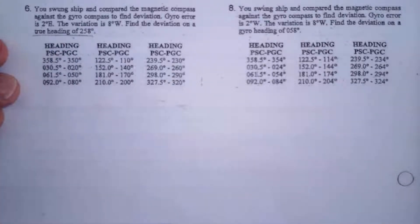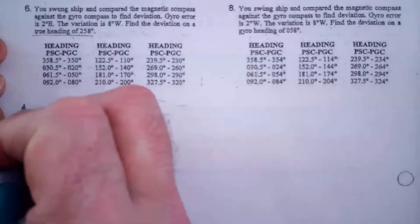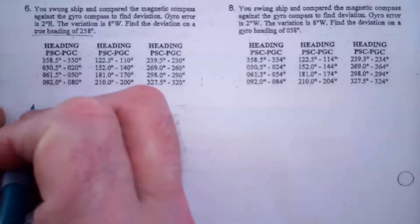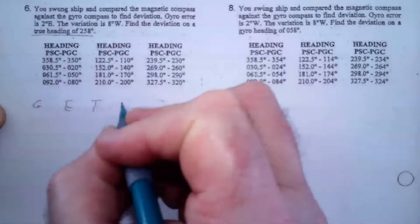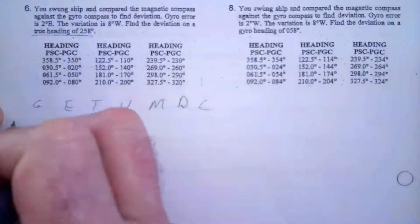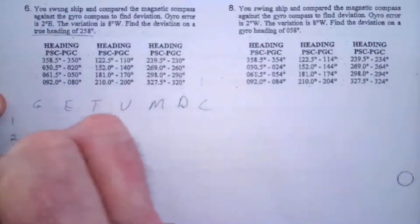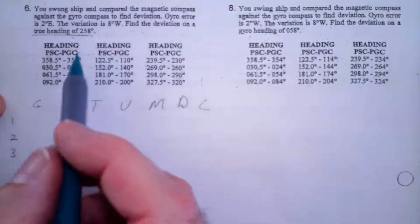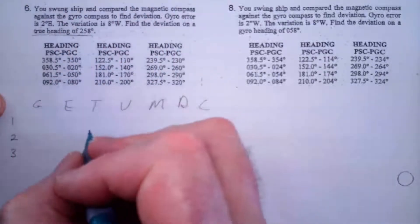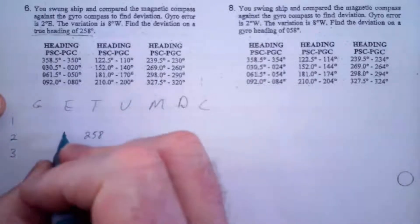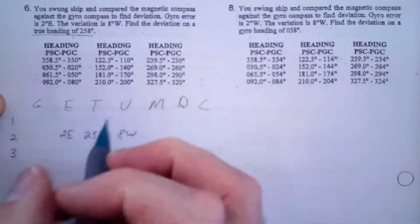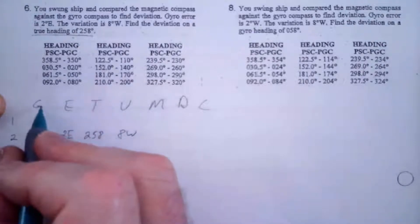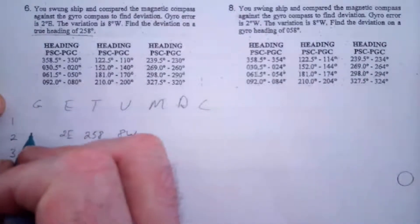So we'll start off as normal with our general computer here, get TVMDC, and I'm going to have my three rows as normal. I'm going to start off with 258 true, so that's going to go underneath the T. There's 258, and I've got 2 east and I've got 8 west.